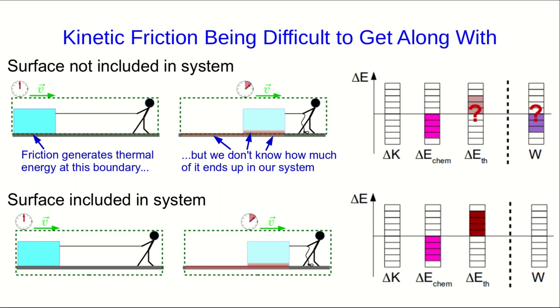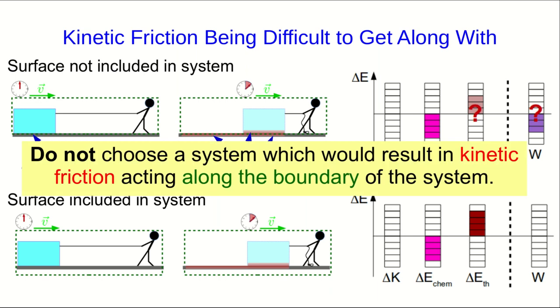For now, all I want to say is that we should never choose a system which would result in kinetic friction acting along the boundary of the system. In other words, if there's kinetic friction between two objects, you should really include both objects in your system.